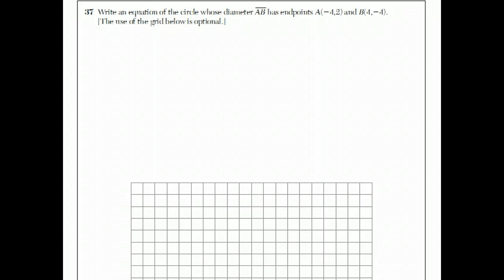Question 37 says to write an equation of the circle whose diameter AB has endpoints A at negative 4, 2, and B at 4, negative 4. So our endpoints of the diameter are negative 4, 2, and B is 4, negative 4.